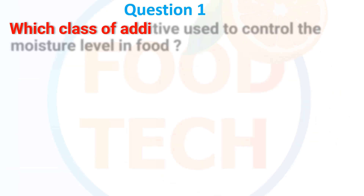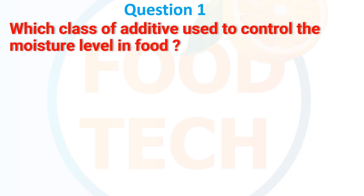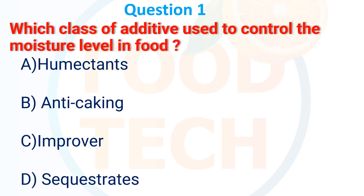Which class of additive is used to control the moisture level in food? A. Humectants, B. Anti-caking, C. Improver, D. Sequestrants. The answer is A. Humectants.